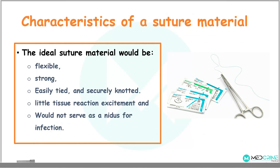What are the characteristics of an ideal suture? Basically, an ideal suture needs to be flexible, strong enough to close the wound, easily tied and securely knotted, cause little tissue reaction, and not serve as a nidus for infection. Unfortunately, in surgery, there is no such thing as an ideal surgical suture.